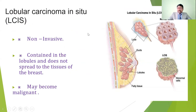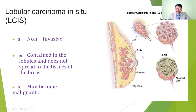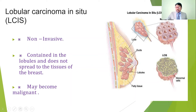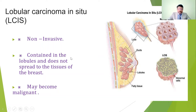Lobular carcinoma in situ (LCIS) affects the lobes, which produce milk. This is also non-invasive — it won't spread to other parts. In normal lobes, there are fluid-filled cavities where milk production takes place, but in LCIS, abnormal cell growth fills the spaces of the lobes. However, if untreated, LCIS may become malignant. Invasive lobular carcinoma is the same condition but spreads to other parts of the body through the lymph nodes and other areas.